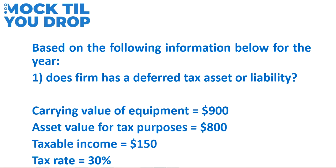Let's answer the first question: does the firm have a deferred tax asset or liability based on this information? The easiest way to determine this is to compare taxable income to accounting profit. If taxable income is greater than accounting profit, more income taxes will actually be paid than what is reported on the income statement, and the company will treat that extra tax as a deferred tax asset. In this case, we aren't given accounting profit, so another way is to compare the carrying value of the asset to its tax base.